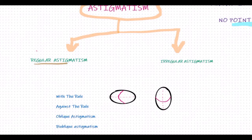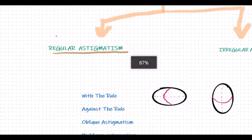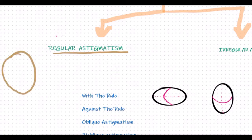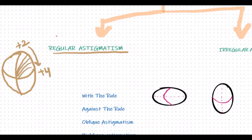In regular astigmatism, the refractive power changes uniformly from one meridian to another. So if this is an astigmatic surface with two principal axes, say one axis is plus two and the other is plus four, the change of power will be very uniform. The meridians in between will have plus three, plus 3.5, plus 3.75, and so on. There is a smooth transition of power from one meridian to another in regular astigmatism.